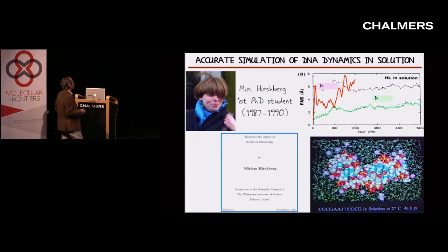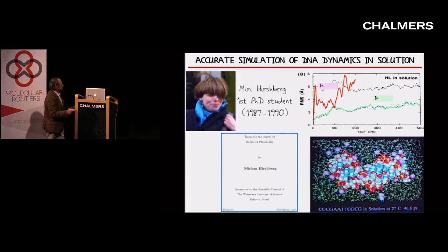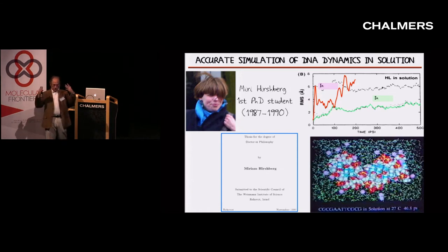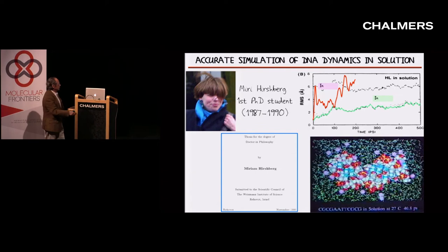My first PhD student, Mary Hirschberg, who actually started with me at the Weismann Institute and then came to Stanford, did a very similar thing for DNA in water. DNA was a very difficult thing to run, because DNA has very large, negatively charged phosphate groups — you need sodium ions. She found that in water, the structure is very well behaved; in vacuum, it just goes crazy.